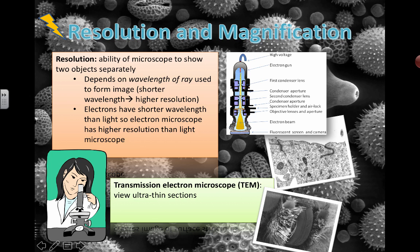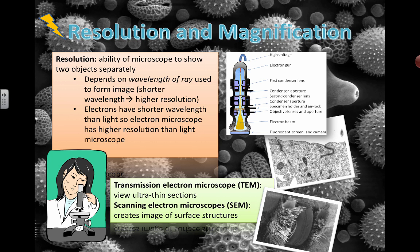These electron microscope images come in two forms. You can have a transmission electron microscope, TEM, or a scanning electron microscope, SEM. If you type in electron micrographs on Google Images, you'll see just amazing images. If it's like a slice through something, we call that a TEM — we're looking at ultra-thin sections. If we're looking at tiny microscopic 3D structures, it gives you an image of the surface, which is really cool, and that's what these pollen images in the background are showing.